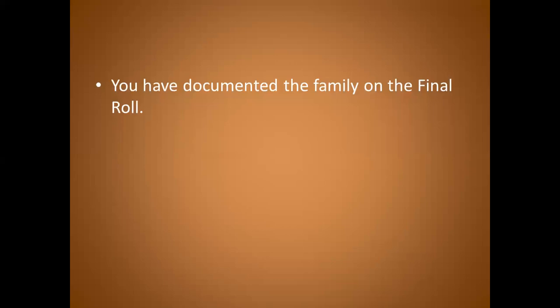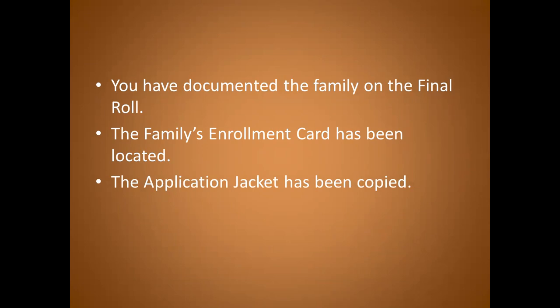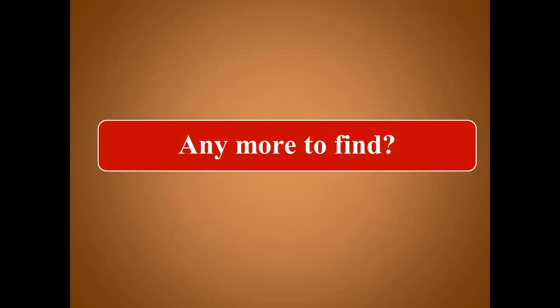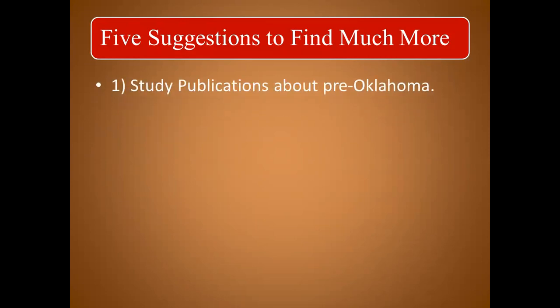You've documented the family, found them on the final roll, have the roll number, found the family's enrollment card, and were excited to locate the application jacket. Many of those application jackets are full of pages, interviews, documents, and birth affidavits from before statehood. There is also the land allotment file including plat maps, and you've even found the actual allotment map showing exactly where your ancestor's allotted land was. So the next question is: is there any more to find? Well, here are five suggestions to help you find so much more.